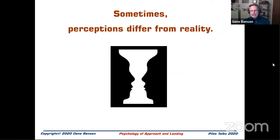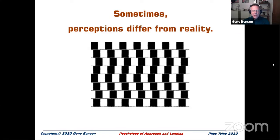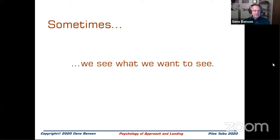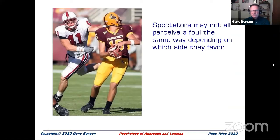Perception alters what humans see into a diluted version of reality, which ultimately corrupts the way humans perceive the truth. When people view something with a preconceived idea, they tend to see those preconceived ideas whether or not they're accurate. For example: is that a light vase on a black background or a pair of black faces on a light background? You can see it both ways. Are all the horizontal lines parallel? Actually they are, but it doesn't seem that way. A runway width illusion — a narrower than usual runway can create the illusion of being higher than actual altitude, while an unusually wide runway creates the opposite illusion.